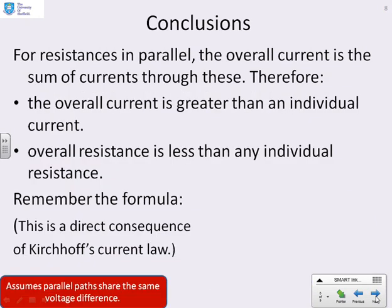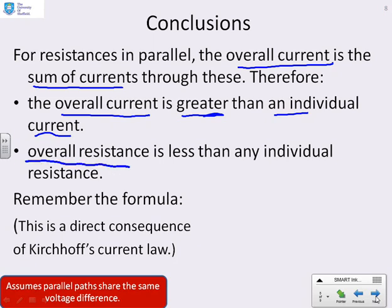So some conclusions. If you have resistances in parallel, the overall current is the sum of the currents through each of those resistances. And therefore, the overall current is greater than the individual current through any of those individual resistances. As a consequence, the overall resistance must be less than any of the individual resistances.